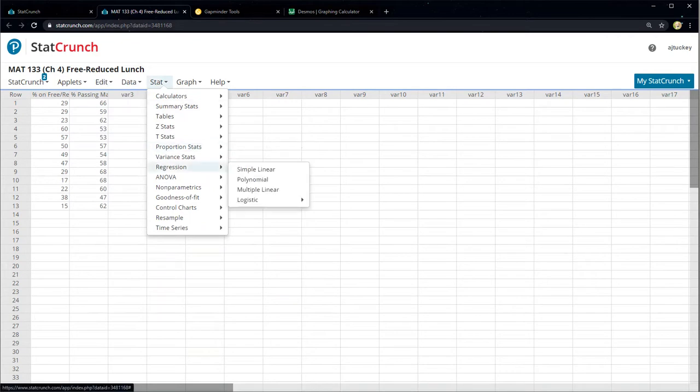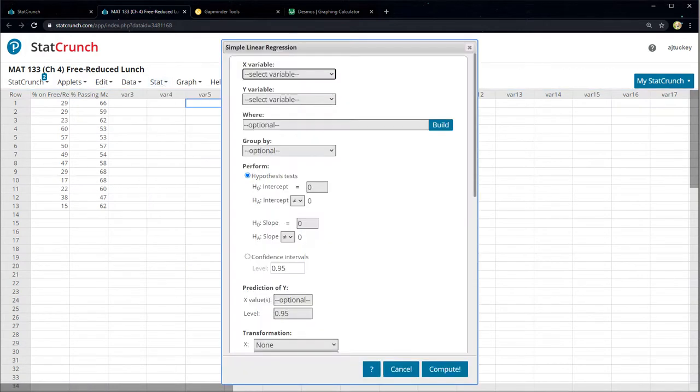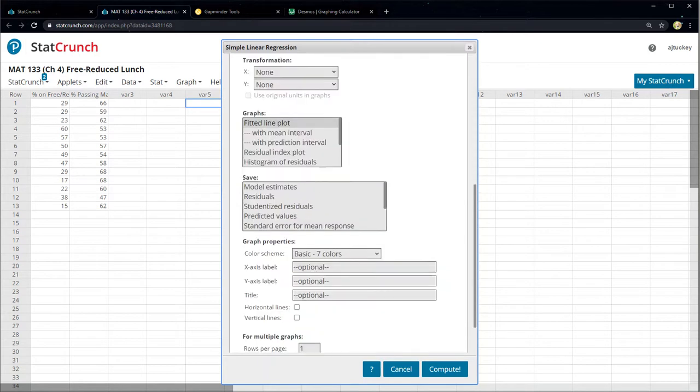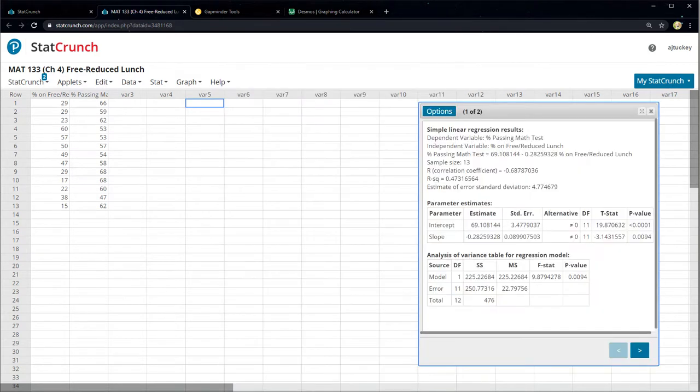Then you go to stat, regression. I'm not clicking on anything yet. I'm just moving my mouse over. And then I want simple linear, so that's what I will click on. I will tell it the x variable is percent on free-reduced lunch, the y variable is percent passing the math test, and all the rest of the stuff is high-level stuff we're going to ignore. So just click Compute.